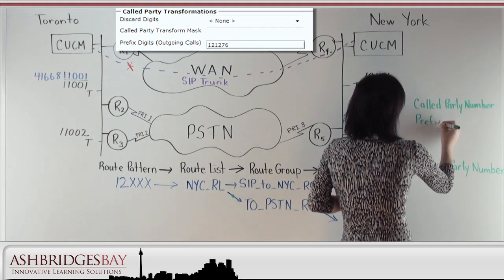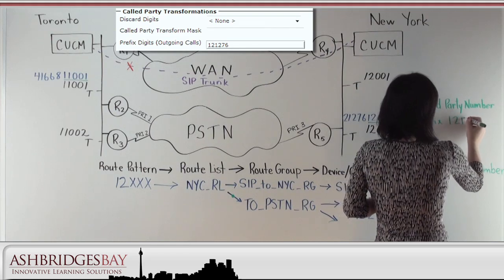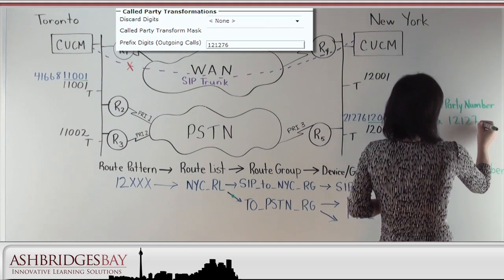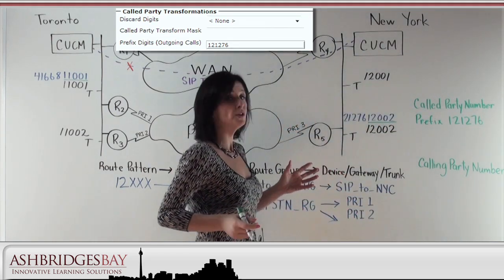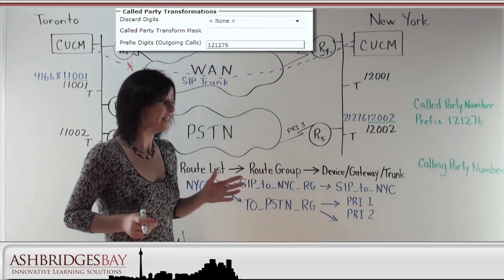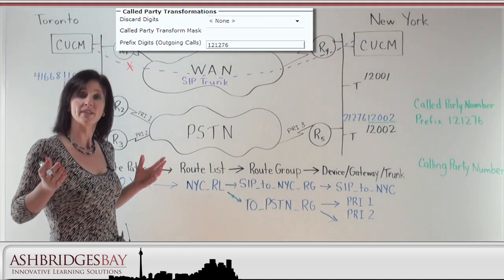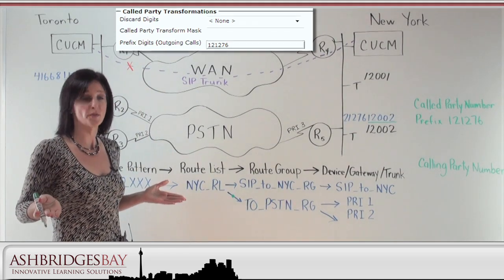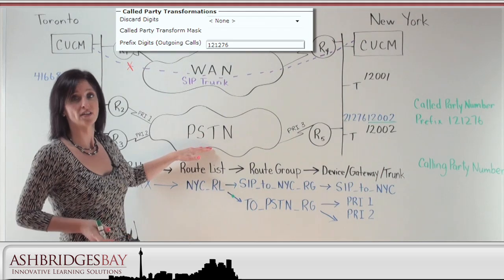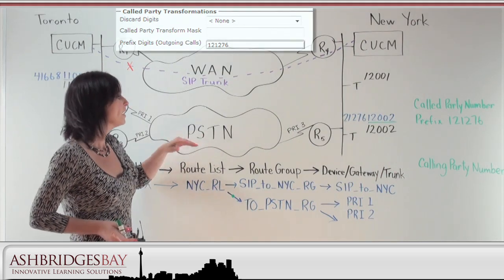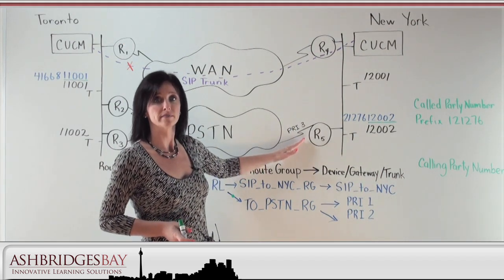We're going to prefix that with 1-2-1-2-7-6. When we add 1-2-1-2-7-6 to 1-2-0-0-1 we have an 11-digit phone number, and the PSTN recognizes that as a long distance number. It comes out to PRI3 in New York. PRI behavior is different in different places, so we're not always sure exactly what digits are going to be sent. Most often this PRI is going to receive 2-1-2-7-6-1-2-0-0-1. Now the call manager in New York is looking after this PRI using MGCP, so it's going to receive a 10-digit number. But we're looking for a 5-digit extension, so we're going to configure significant digits and say we only want to look at the last 5 digits. When that's configured, we'll strip the prefix and get 1-2-0-0-1 sent to the call manager, and the call will be routed to that telephone.